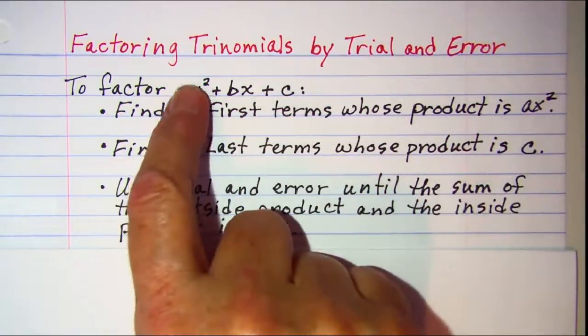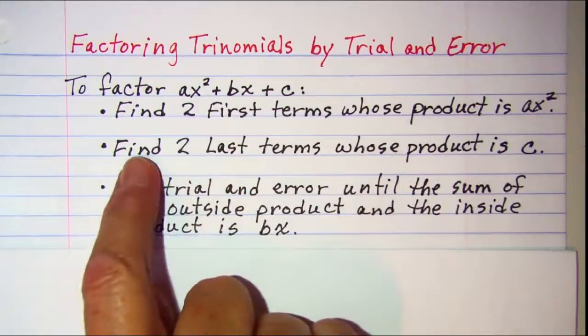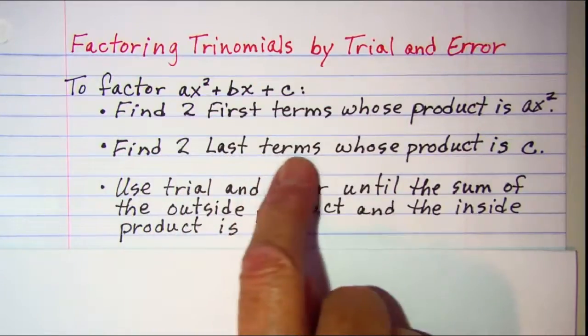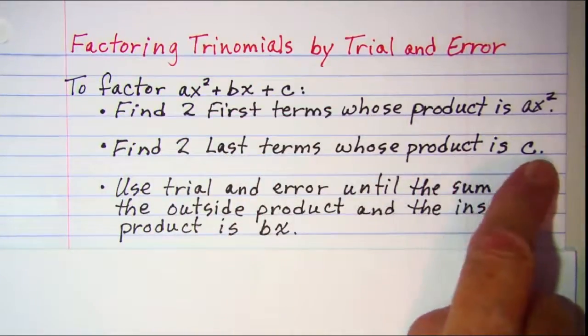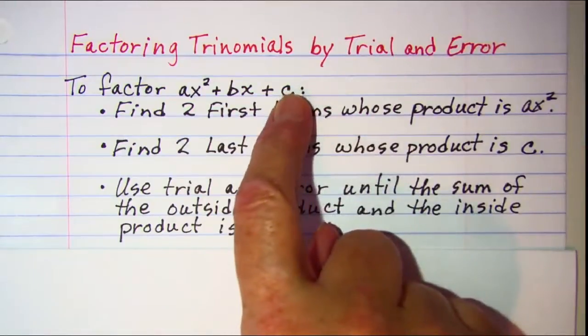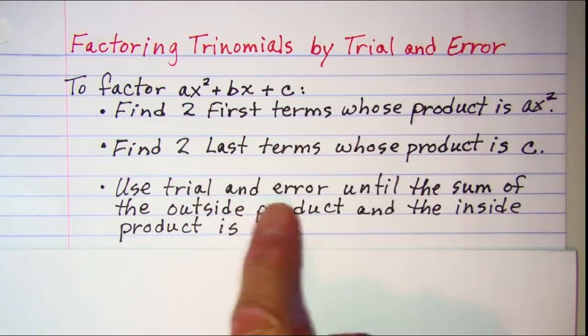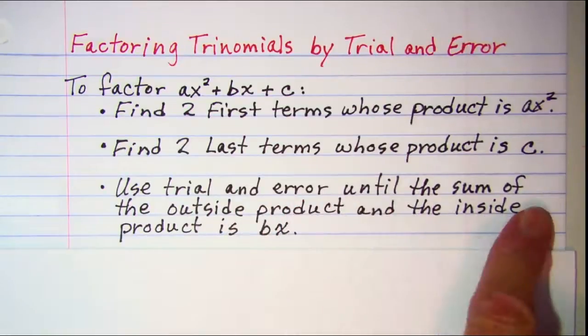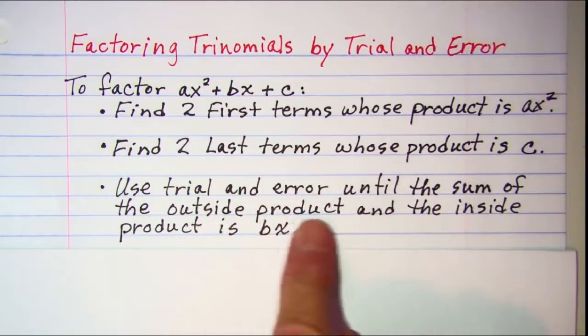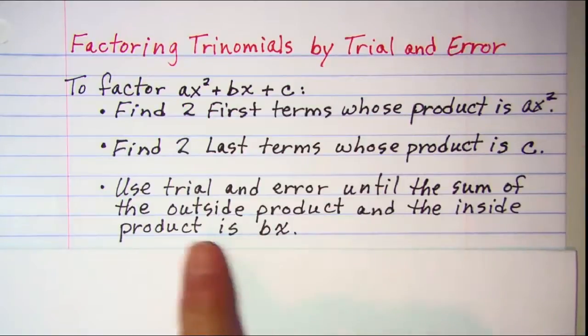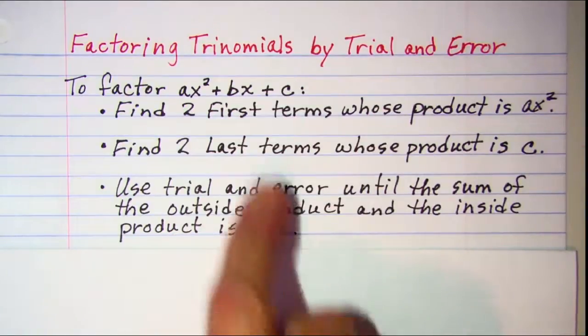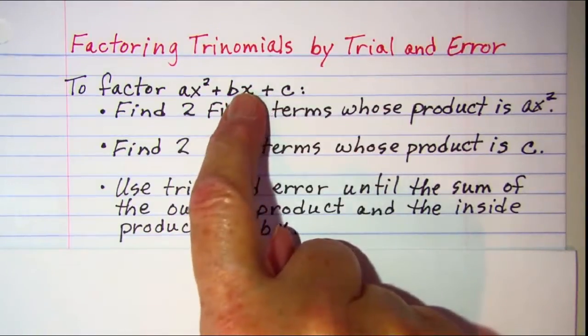We want to find two last terms whose product is c, which is the last term in the trinomial. Then we want to use trial and error until the sum of the outside product and the inside product is bx, which is the middle term in our trinomial.